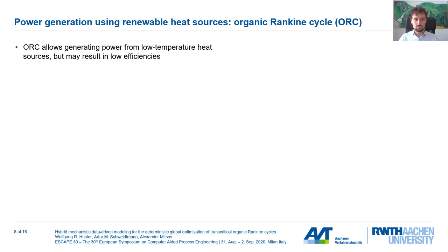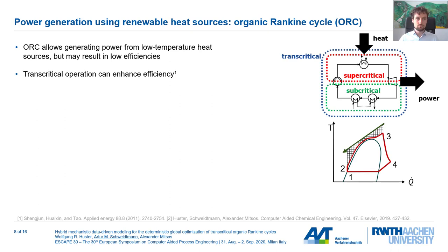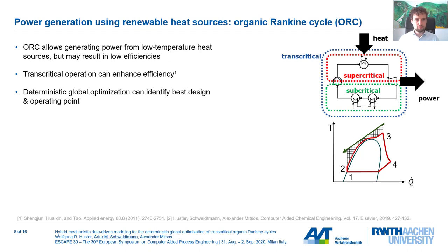Let's move on to the case study. We look at organic Rankine cycles, which can be used to recover power from low-temperature heat sources. However, ORCs may suffer from low efficiencies, so we look at transcritical operation, where the low-pressure parts operate at subcritical pressure and the high-pressure part is supercritical. We want to use deterministic global optimization to identify the best design and operation of these ORC cycles.